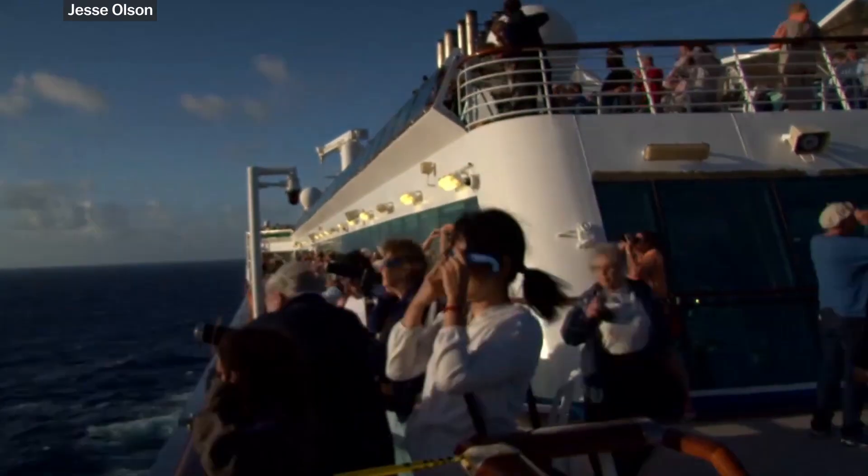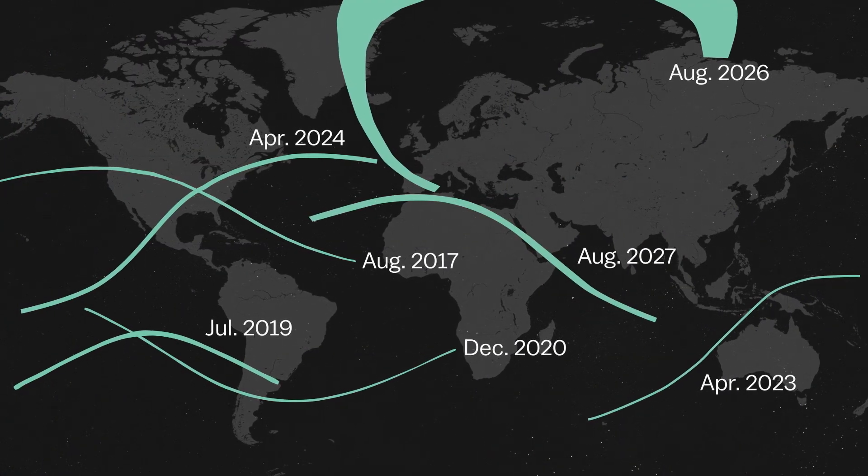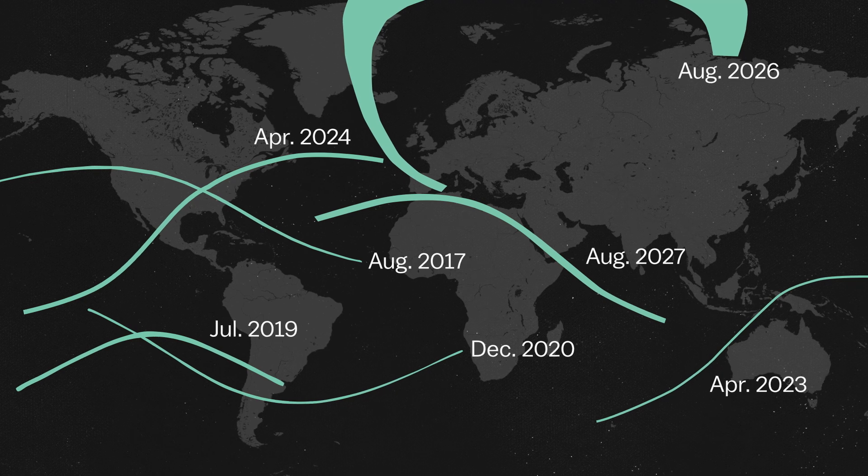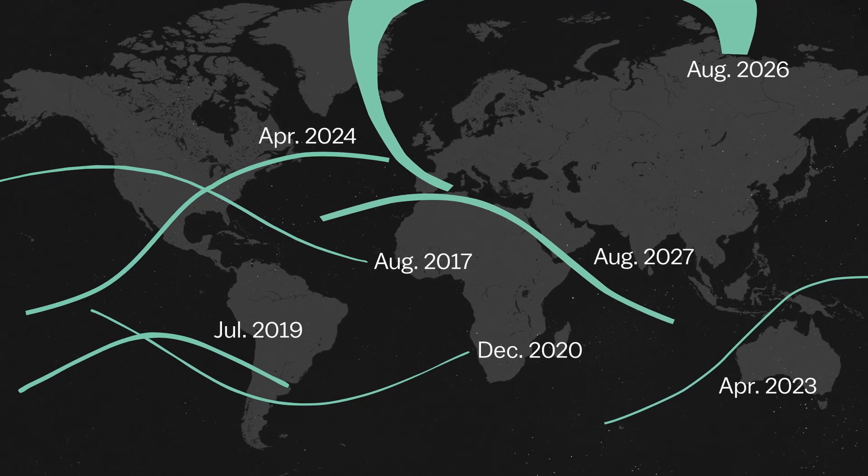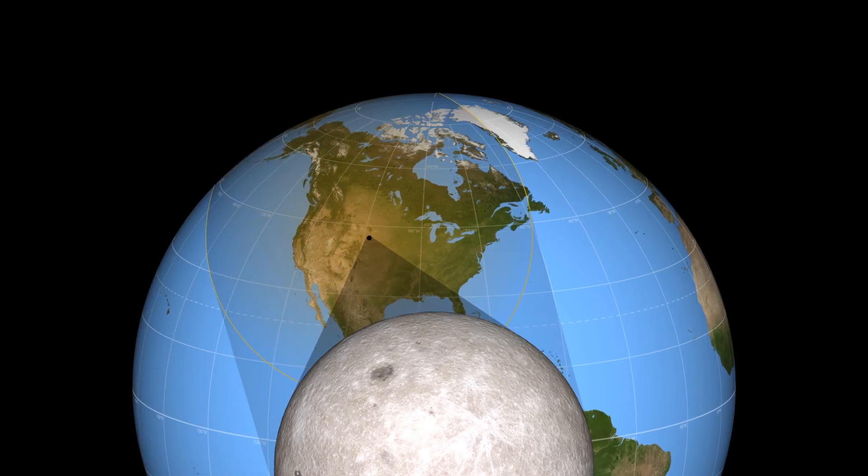Total solar eclipses seem much more rare because totality lasts just a few minutes. And although Earth gets a total solar eclipse every 18 months on average, each one is only viewable by less than half a percent of Earth's surface. Eclipse chasers travel all over the world to put themselves in the path of that shadow.